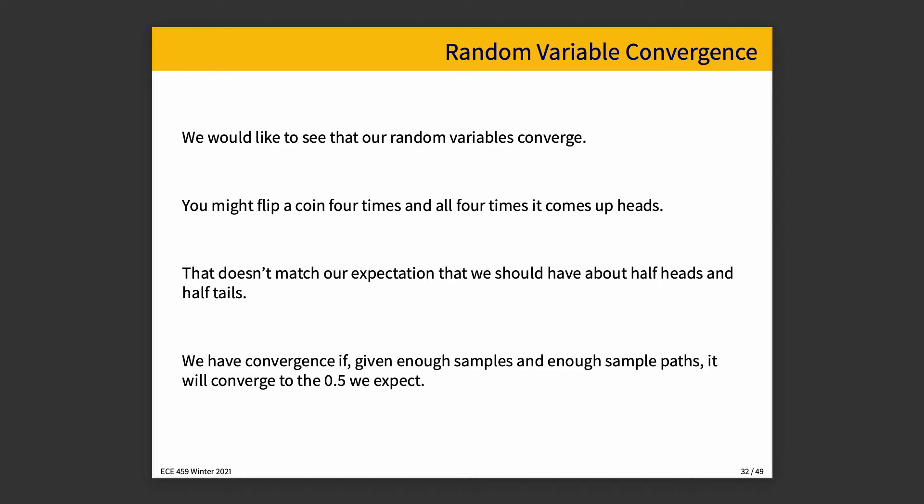When we talk about flipping a coin and it comes up heads four times, that doesn't match our expectation that it should be about half heads and half tails. However, we have convergence. If given enough samples and enough sample paths, then eventually we get convergence on, say, 0.5 probability of getting heads that we would expect. So you can't read too much into one single observation or even one single set of experiments. But we have convergence if, in the long run, as we continue to do more and more experiments, we see it closing in on a particular value.